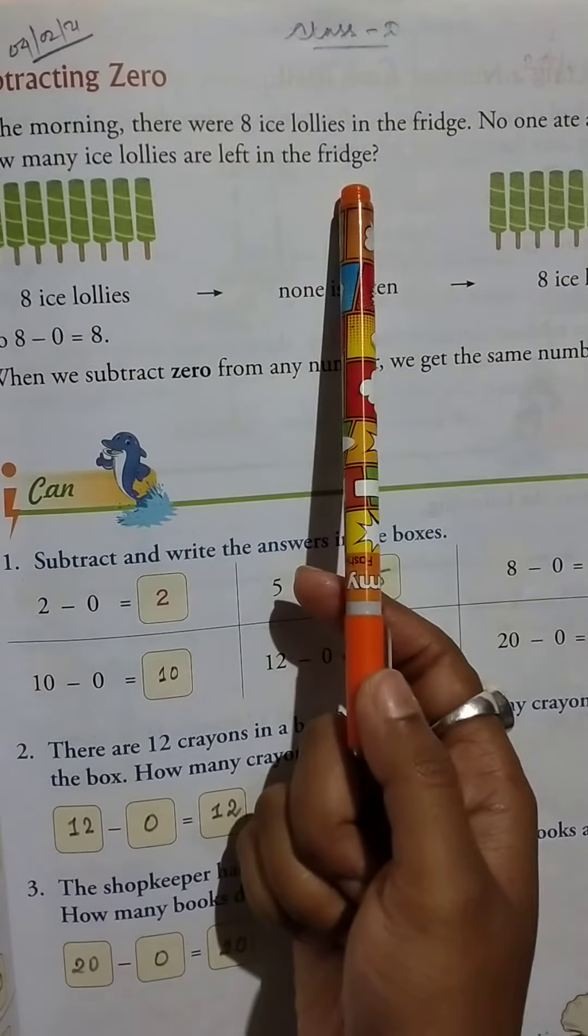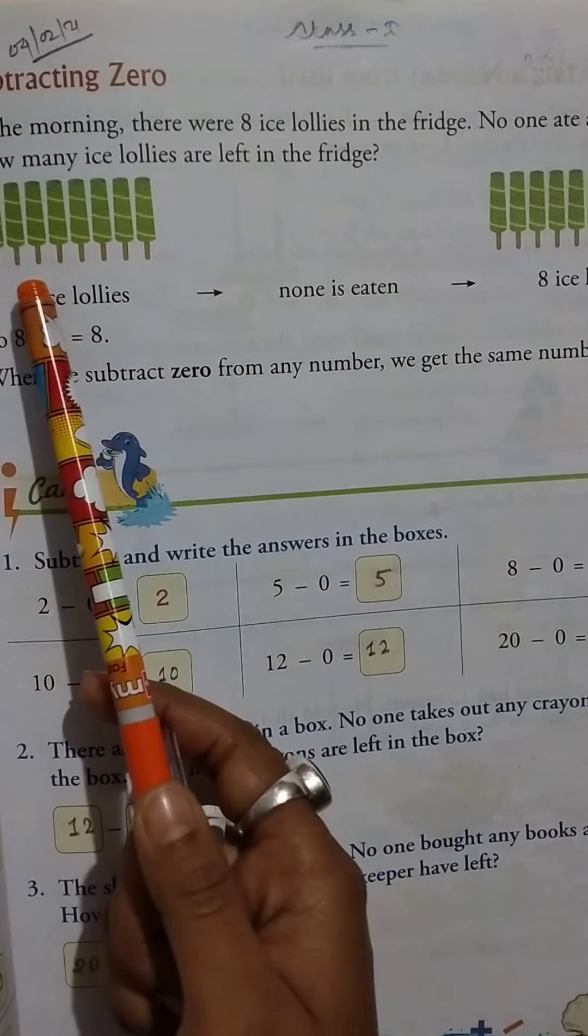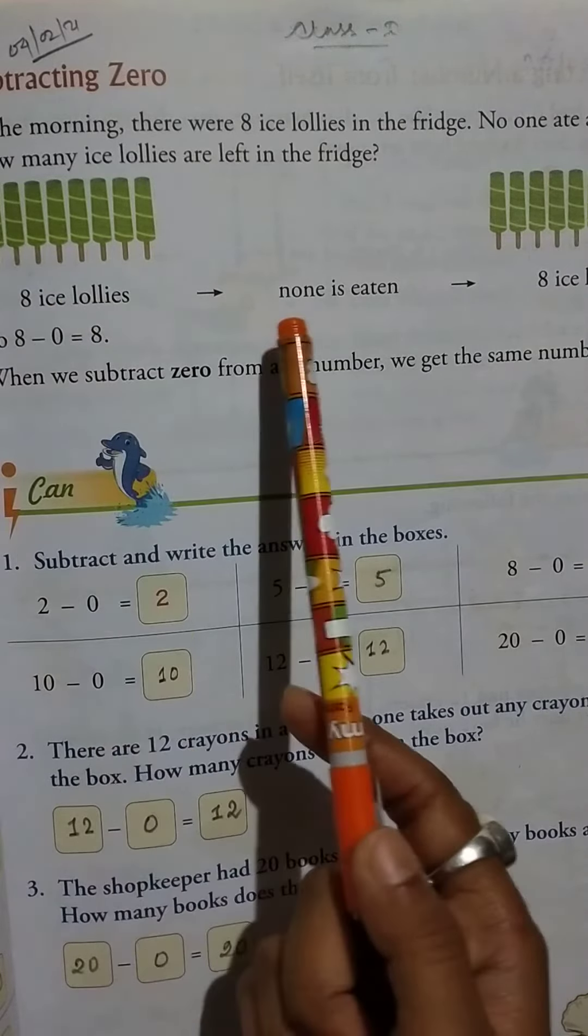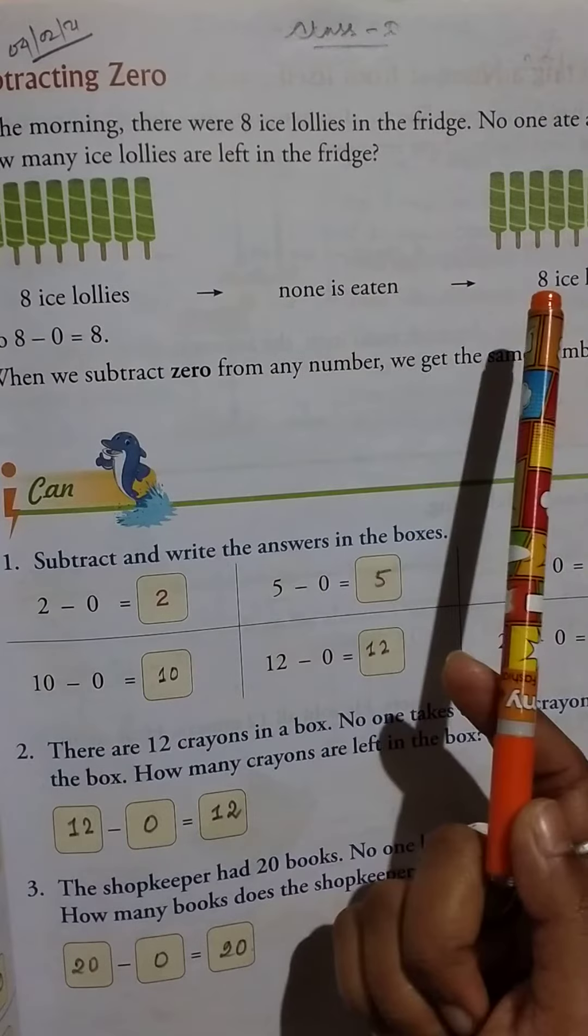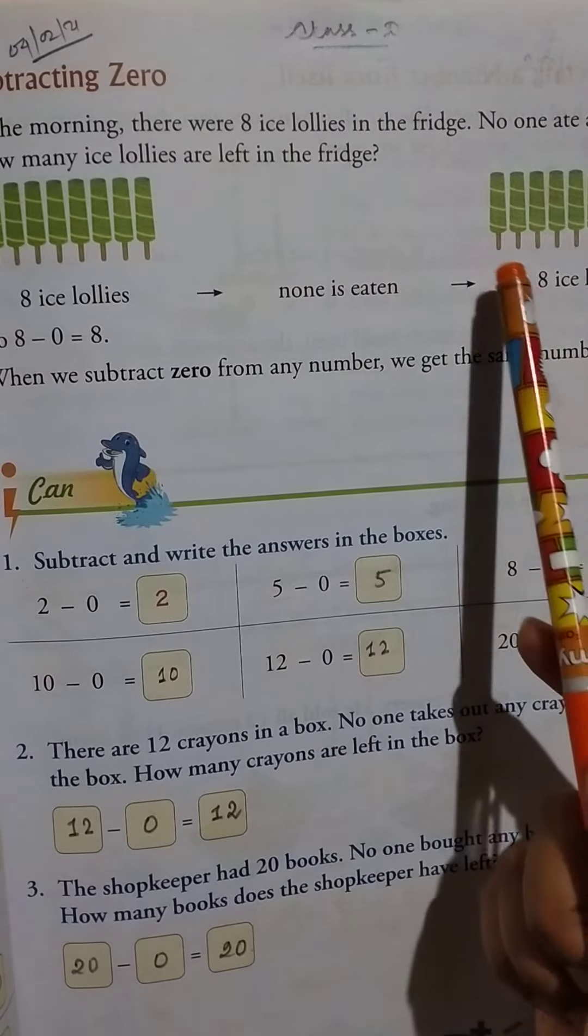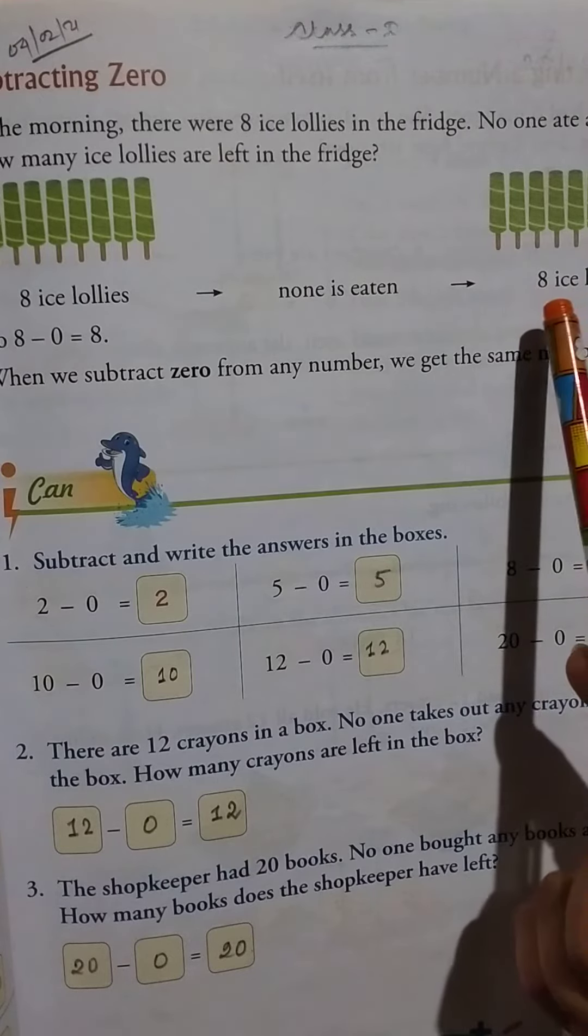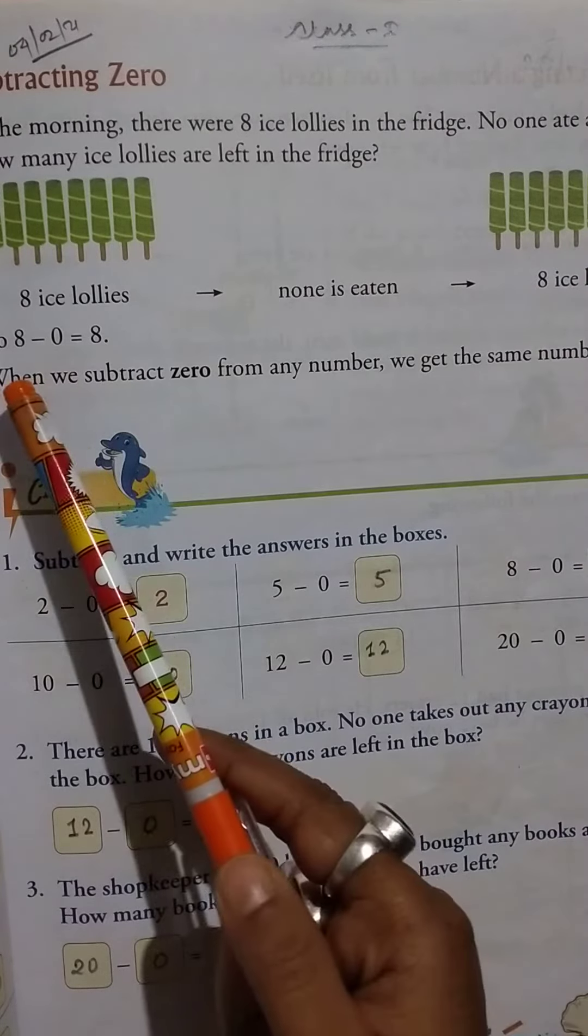So here, one, two, three, four, five, six, seven, eight - eight ice lollies. None is eaten. So here again: one, two, three, four, five, six, seven, eight. Eight ice lollies. So 8 - 0 = 8.